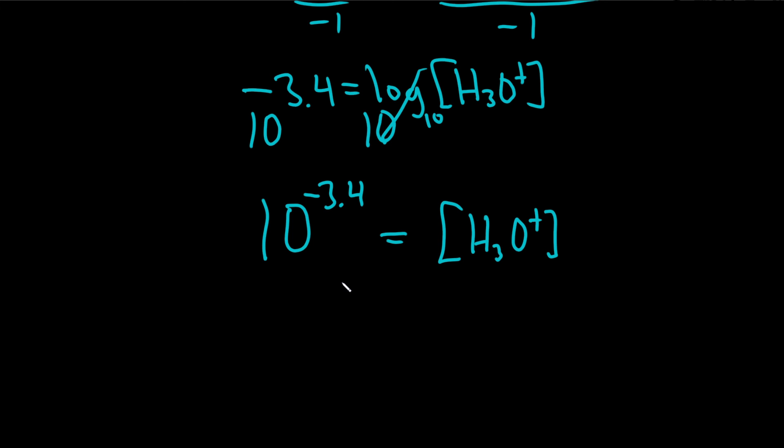I'm going to type this into my calculator, 10 to the negative 3.4. Okay. And my calculator actually gave me the scientific notation. So it'll be four times 10 to the negative 4. That would be the hydronium ion concentration.